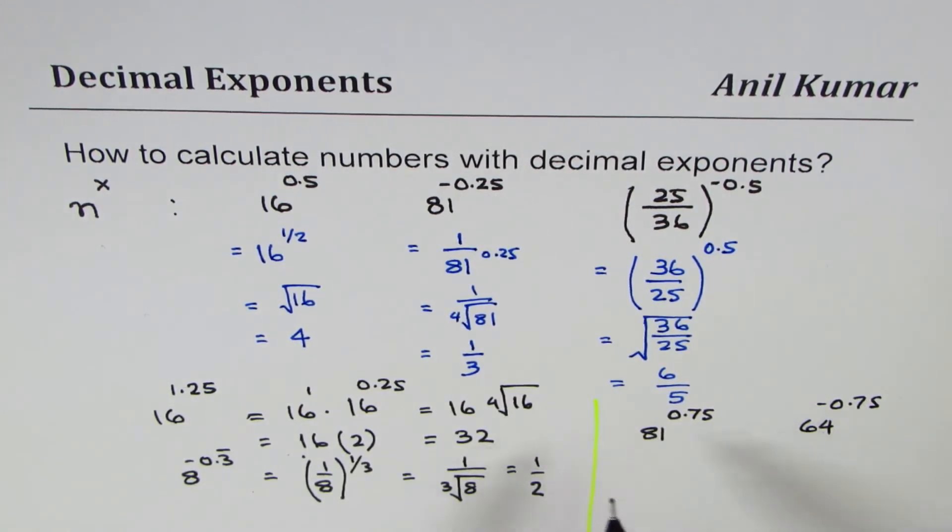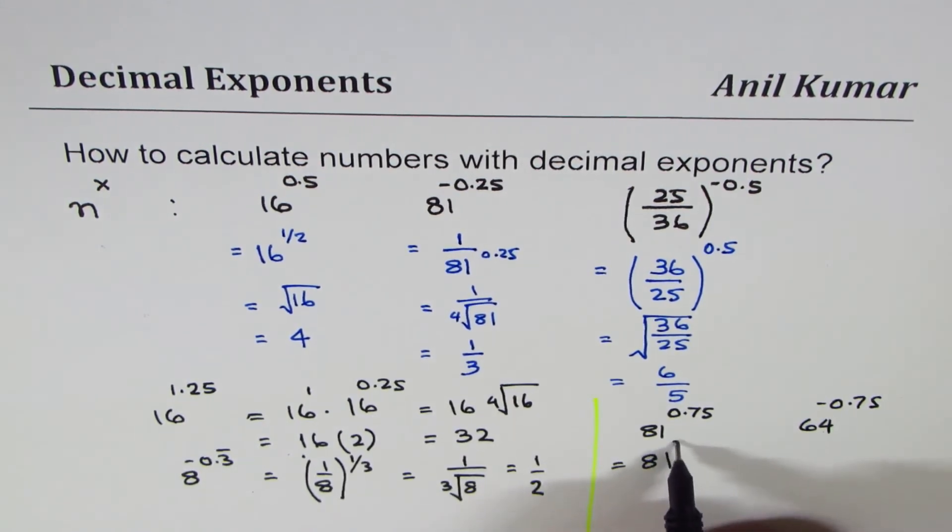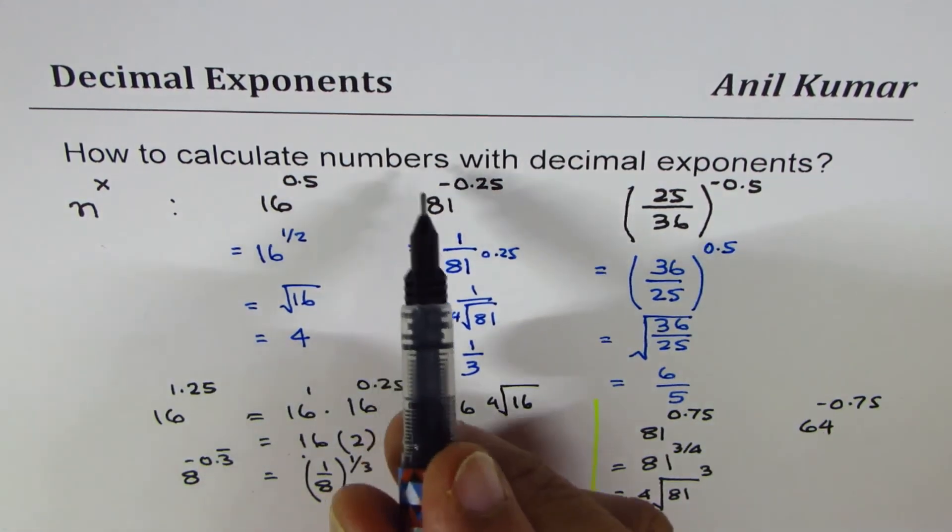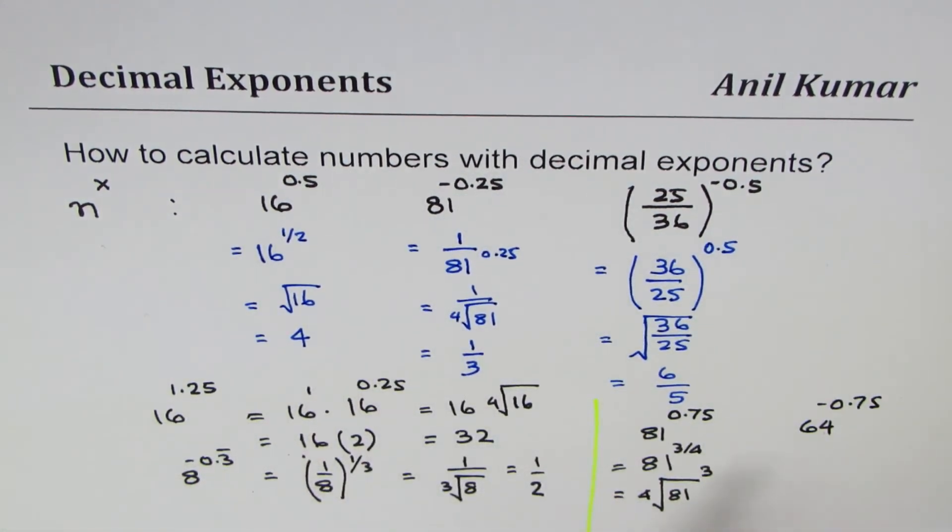Let me do 81 to the power of 0.75. 0.75 means 3 over 4, so we could write this as 81 to the power of 3 over 4. That really means the fourth root of 81 and then cube it. The fourth root of 81 is 3, and the cube of 3 is 27, so the answer is 27.